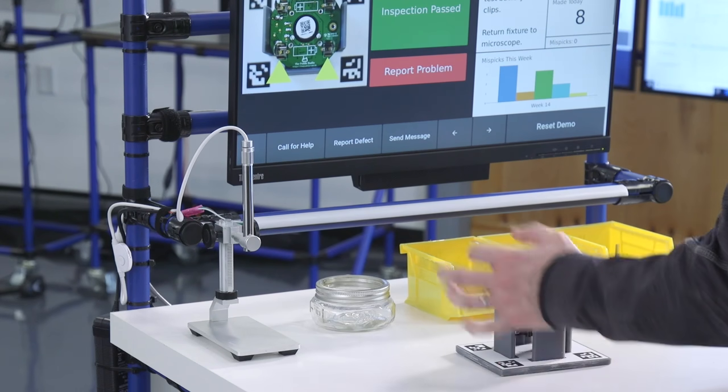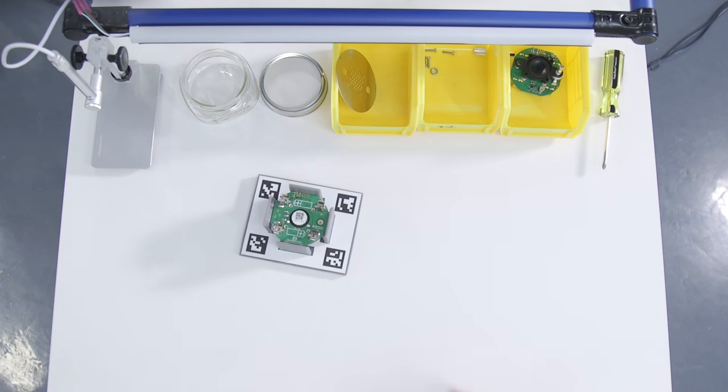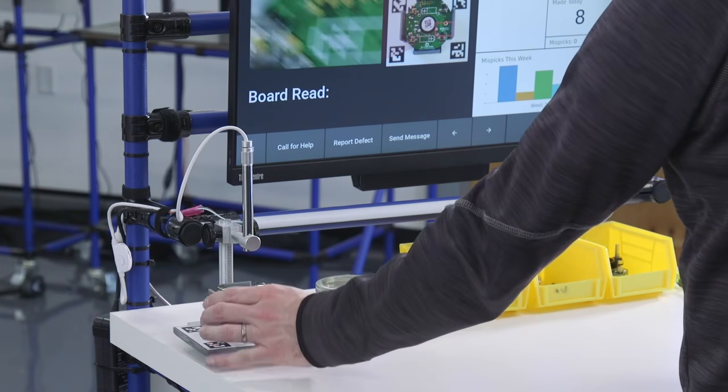the Tulip app follows along with the operator, dynamically providing context-relevant assistance and quality checks at the important moments in the process.